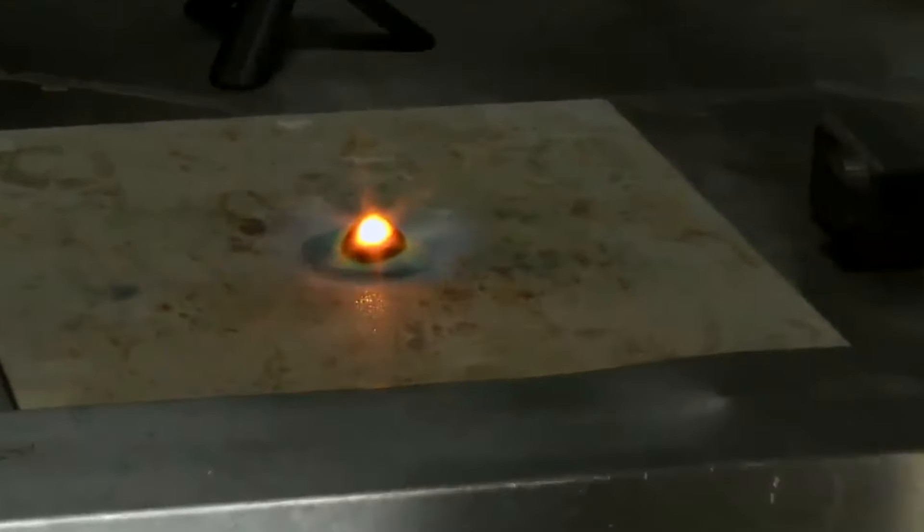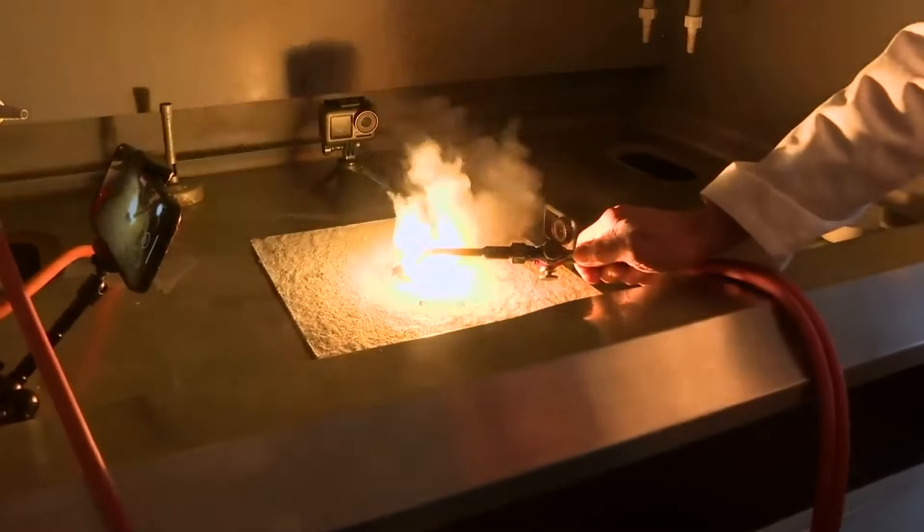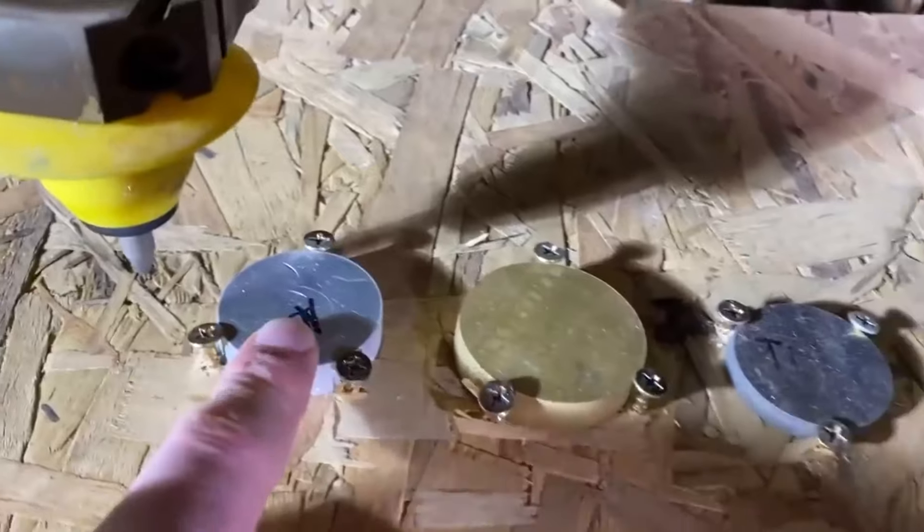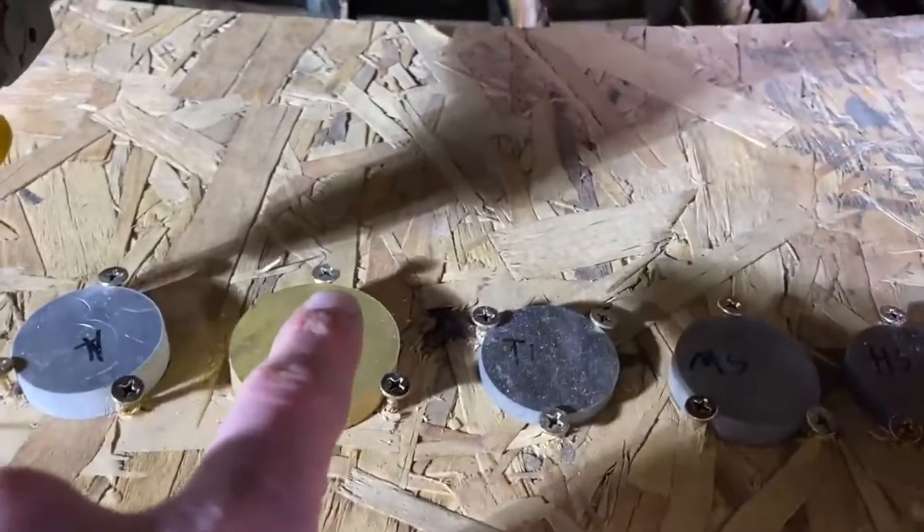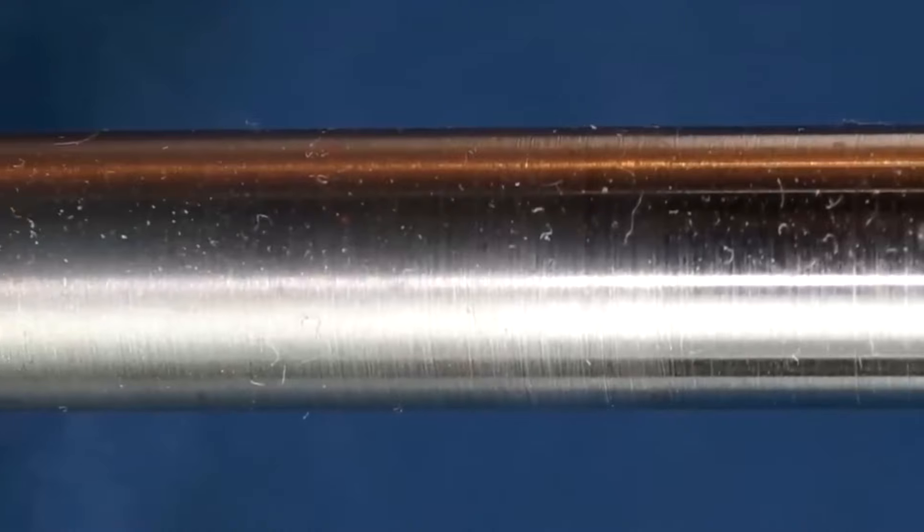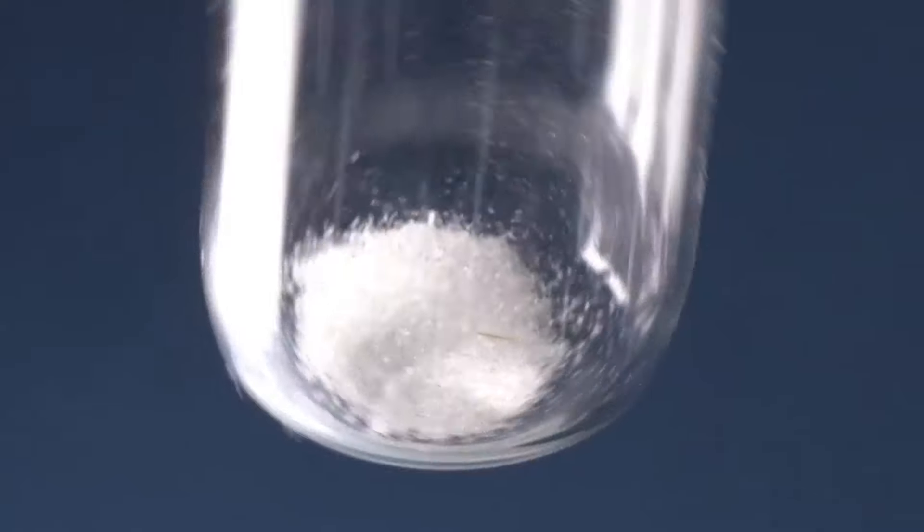Tungsten's ability to maintain structural integrity at temperatures exceeding 3,400 degrees Celsius makes it ideal for use in rocket nozzles, turbine blades, and other critical aerospace parts where heat resistance and durability are paramount. Its high density also contributes to its use in ballast for aircraft and spacecraft, helping maintain stability and balance.